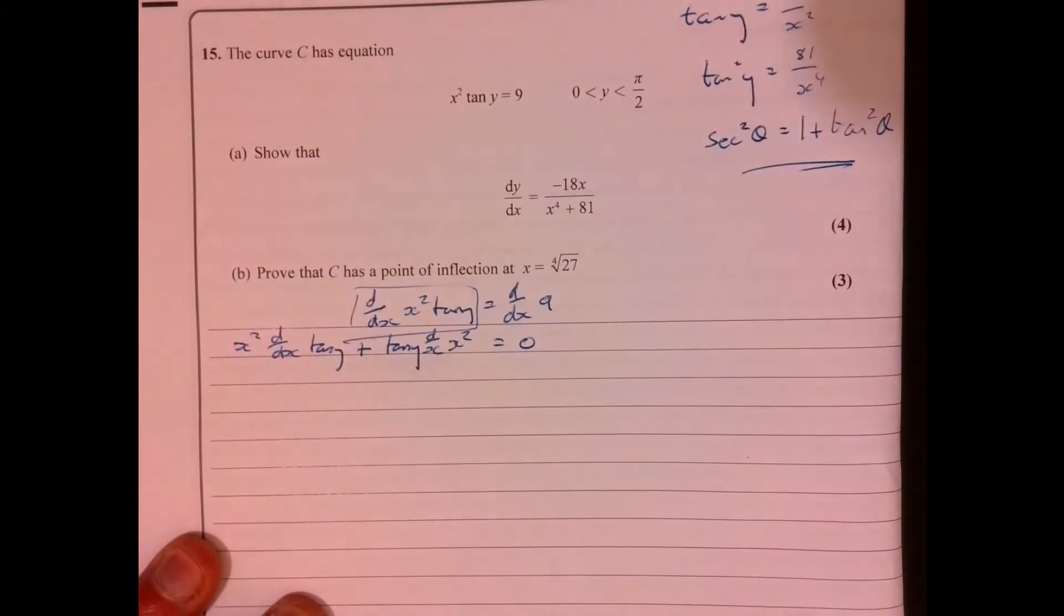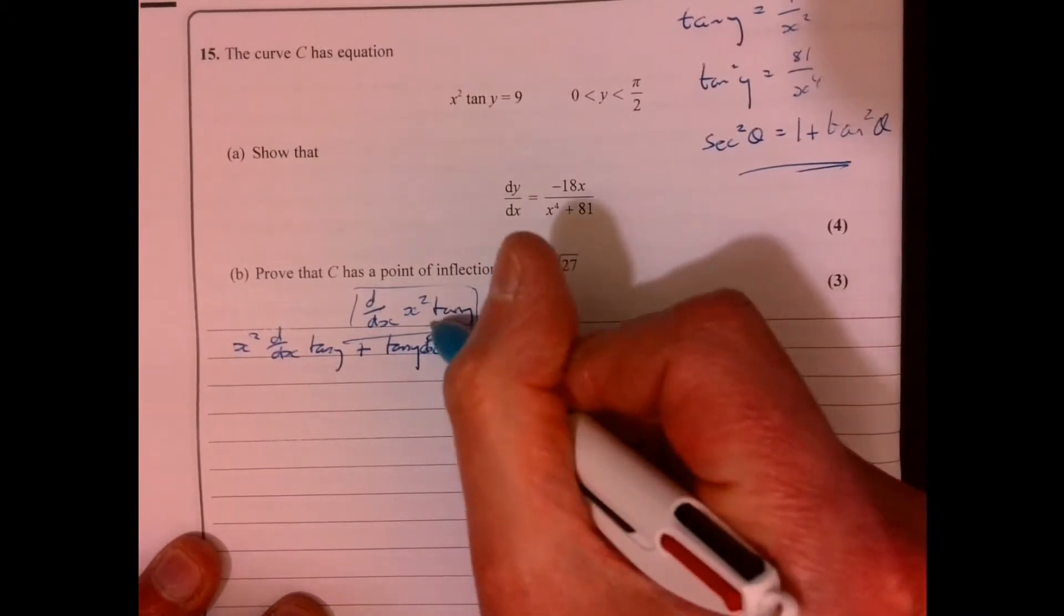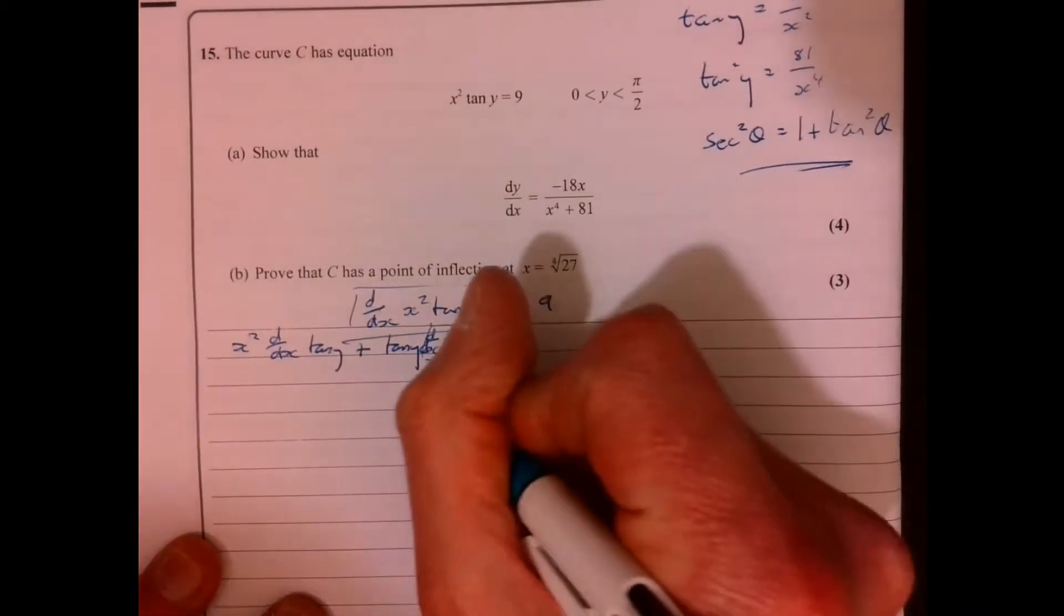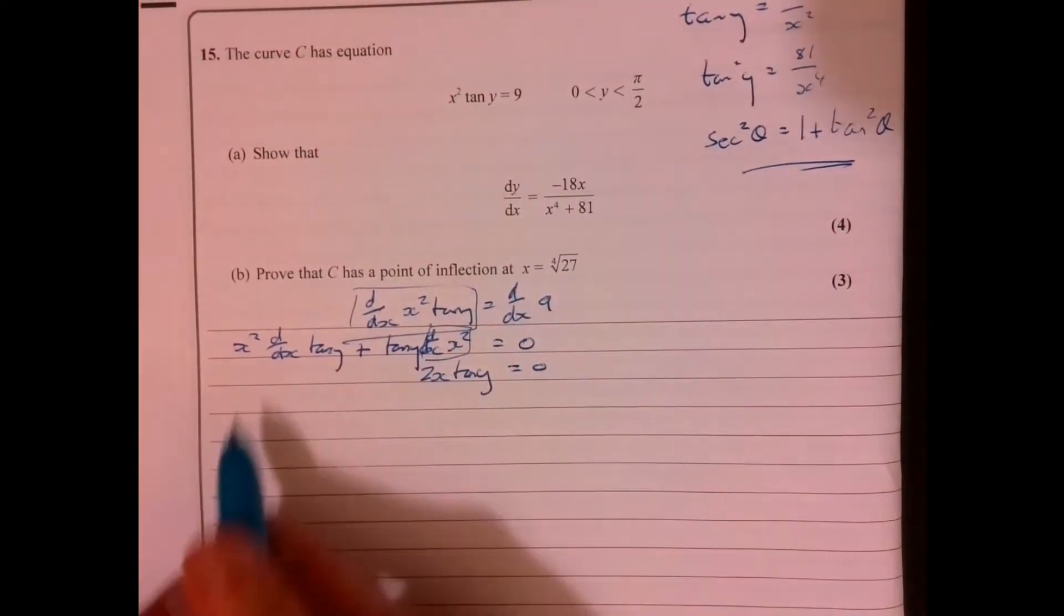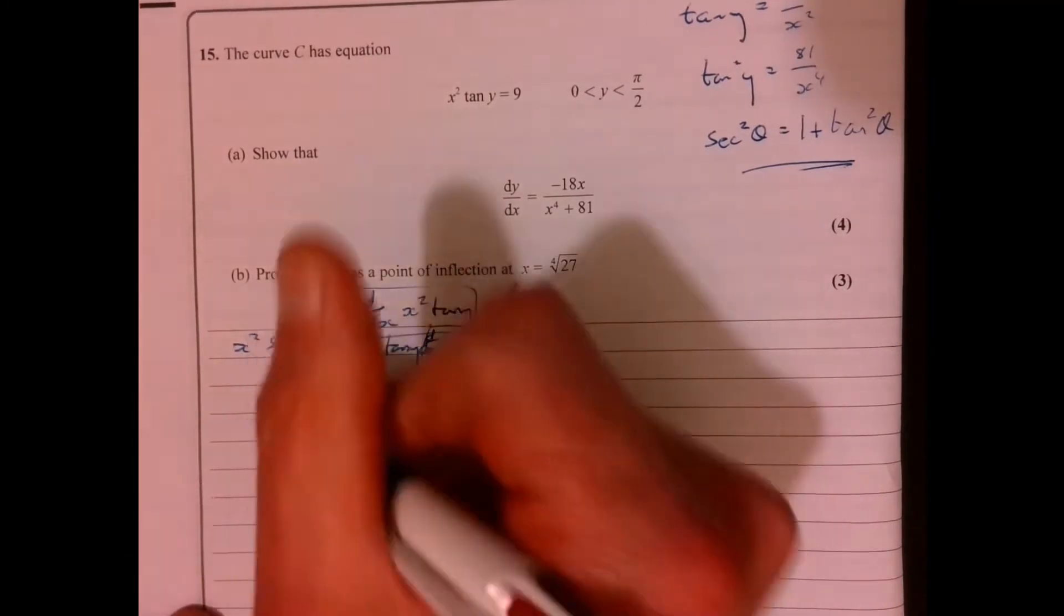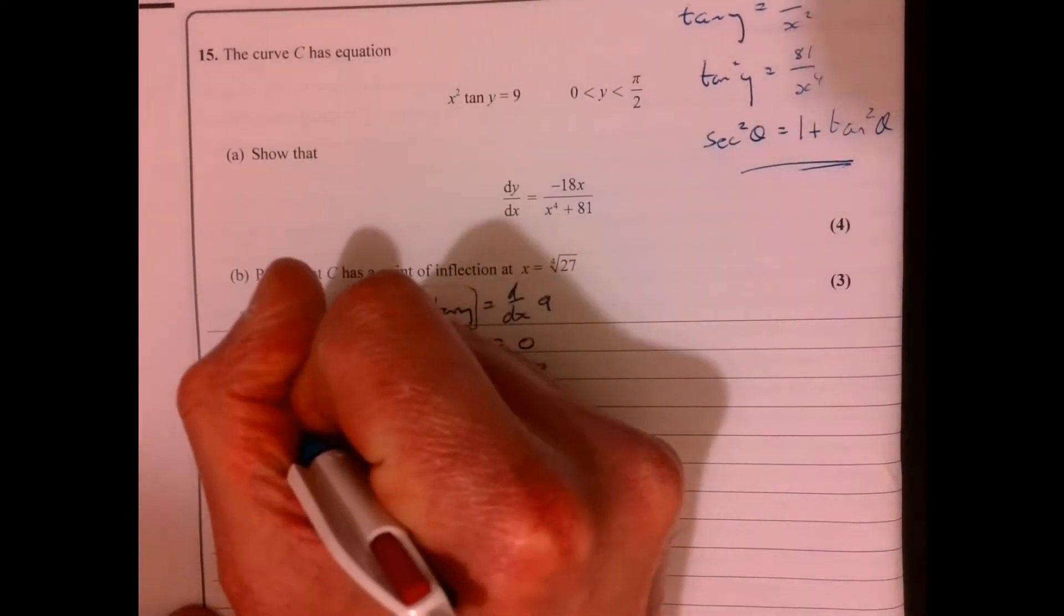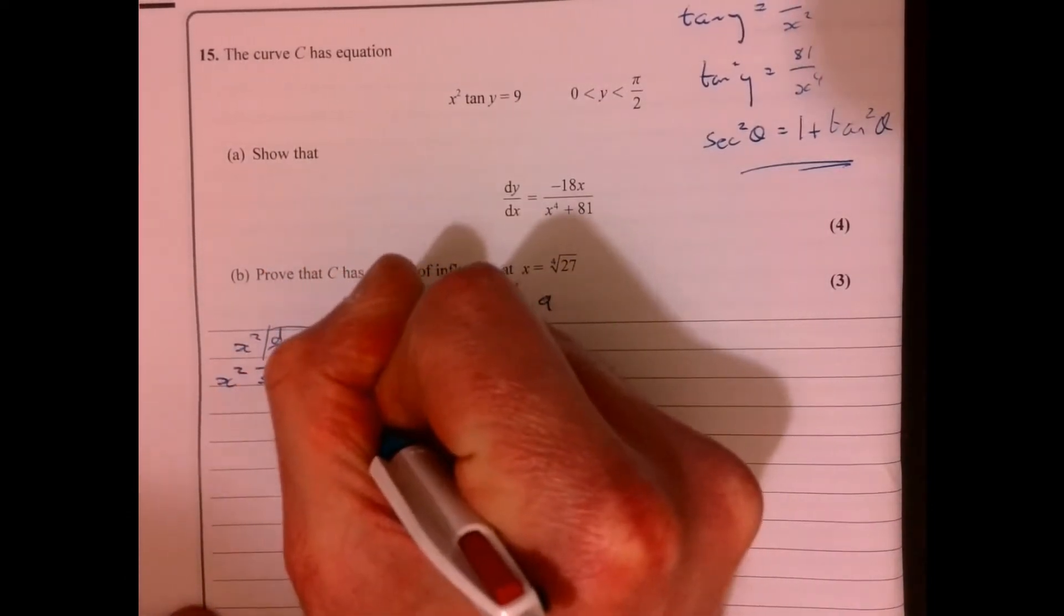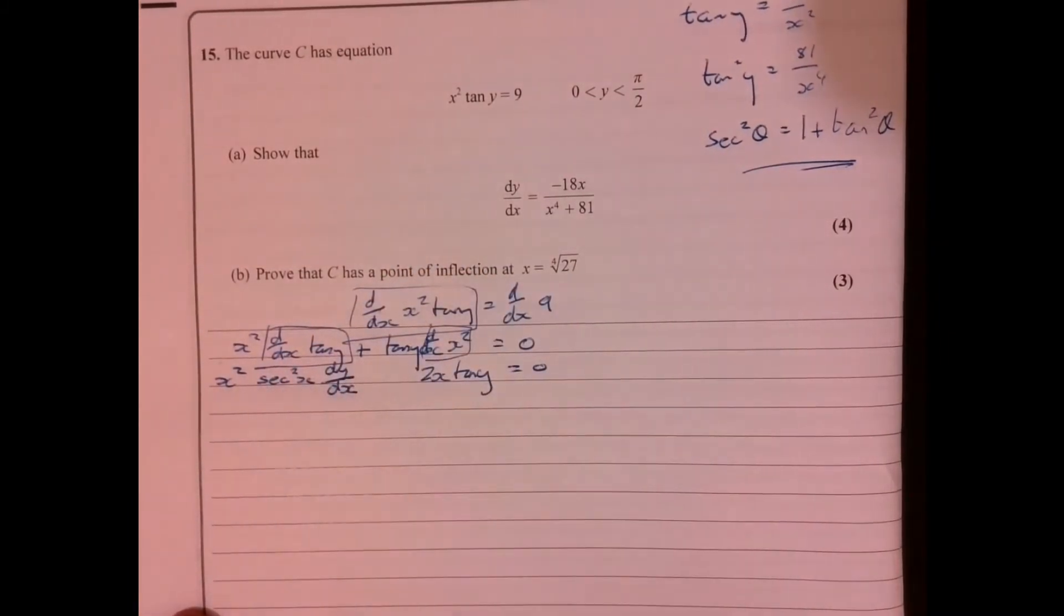And again, what we're going to do, let's do the easy stuff. Because I can differentiate the x squared with no bother at all. So that gives me 2x tan y. Remember, the whole thing is equal to 0. Now, what happens here? I know this is kind of the interesting bit. When we do this part, we're going to get our x squared. Now, when you differentiate tan y, you get sec squared y. Remember, it's with respect to x. So that's where we write dy over dx.